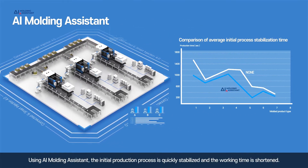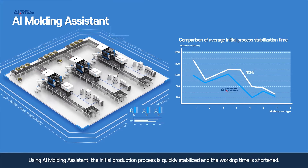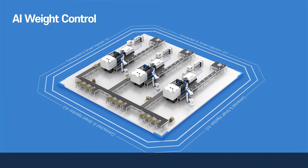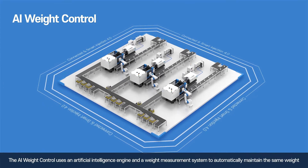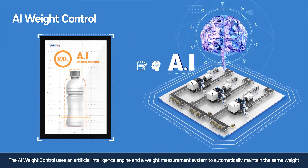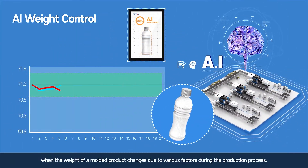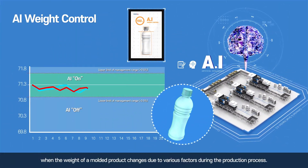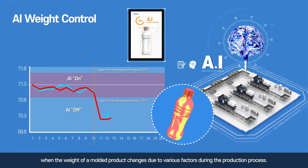Using the AI Molding Assistant, the initial production process is quickly stabilized and working time is shortened. The AI weight control uses an artificial intelligence engine and a weight measurement system to automatically maintain the same weight when the weight of a molded product changes due to various factors during the production process.